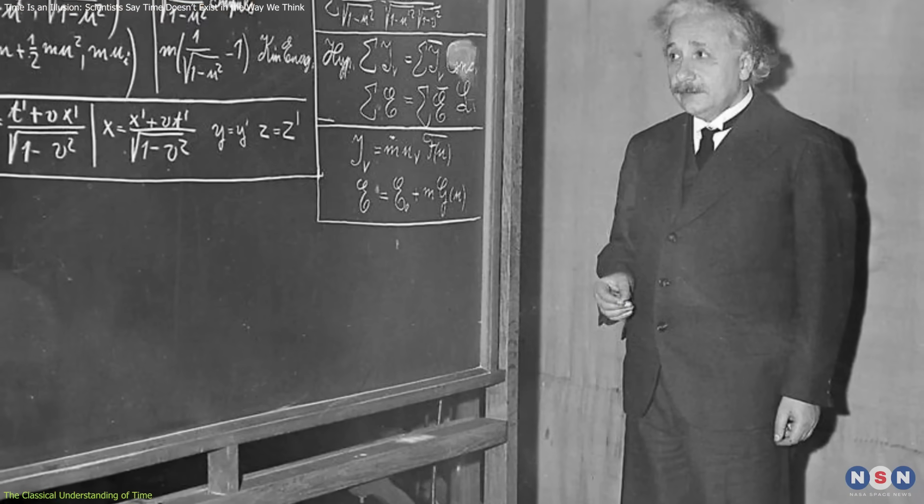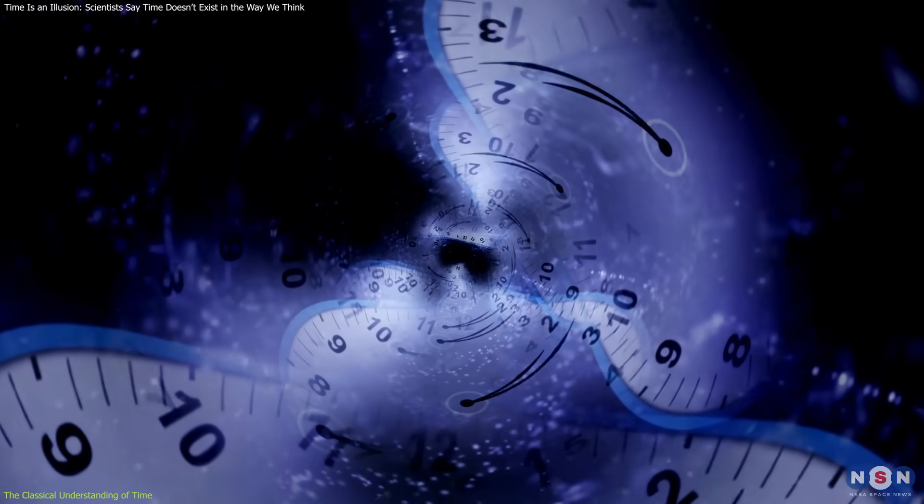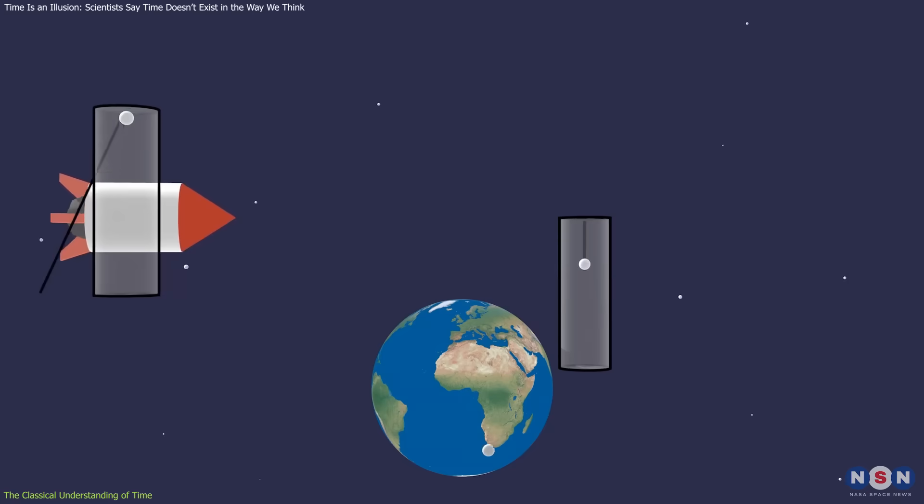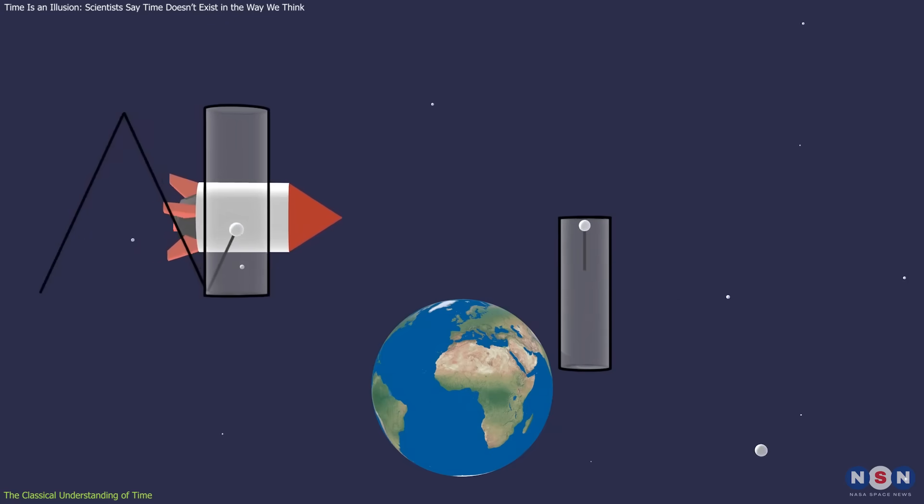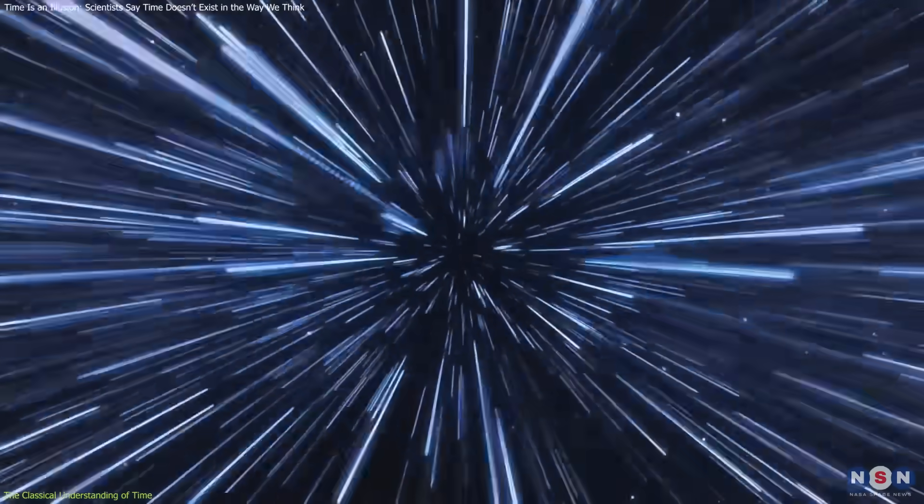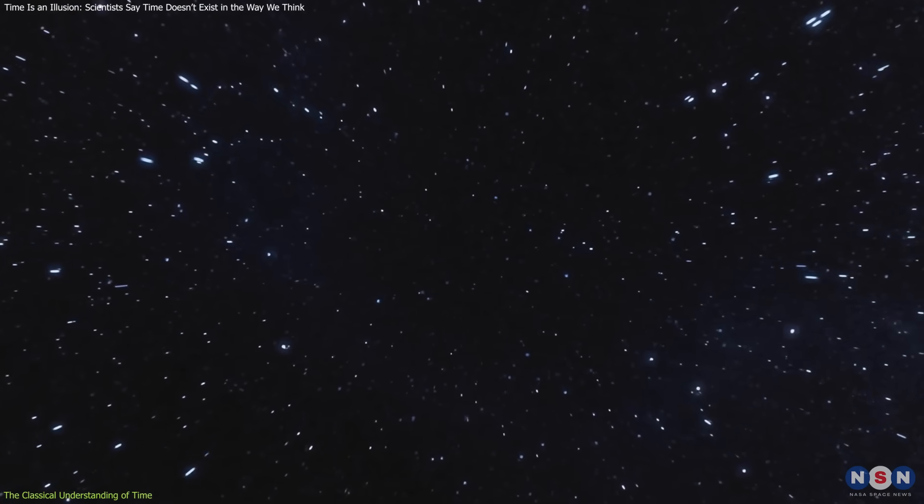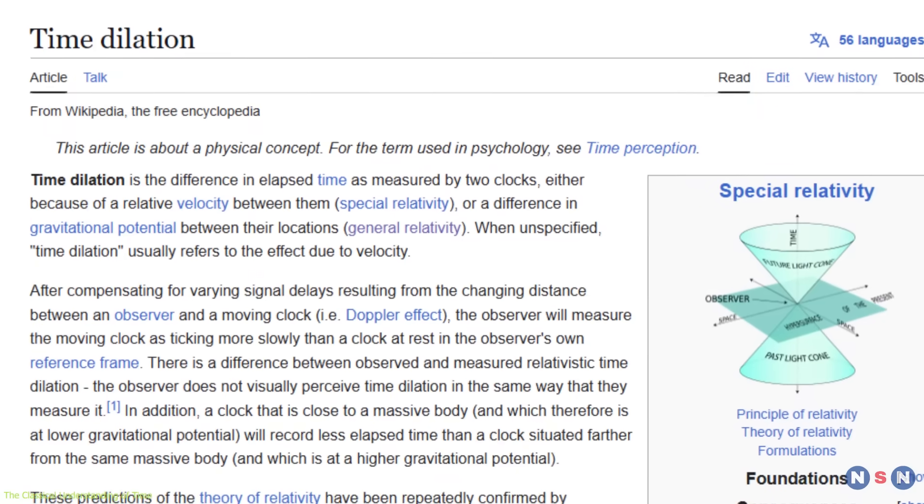In his special theory of relativity, Einstein proposed that time is not a universal constant, but is relative, varying with the observer's state of motion. He demonstrated that as an object approaches the speed of light, time for that object slows down relative to a stationary observer, a phenomenon known as time dilation.